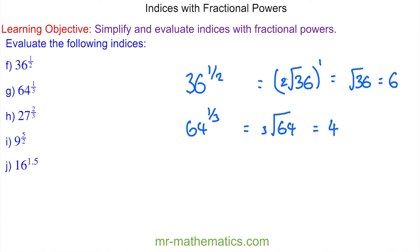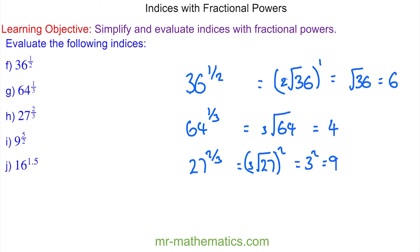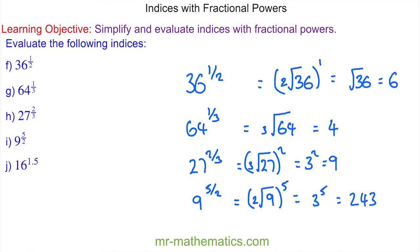For question h, 27 to the two thirds: we're looking at the cube root of 27 squared. The cube root of 27 is three, and three squared is nine. For question i, we have nine to the power of five halves, which is the square root of nine raised to the power of five. The square root of nine is three, and three to the power of five is 243.